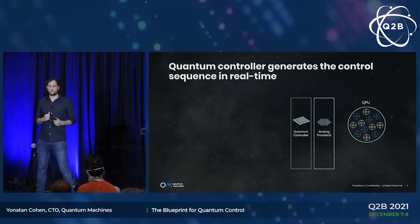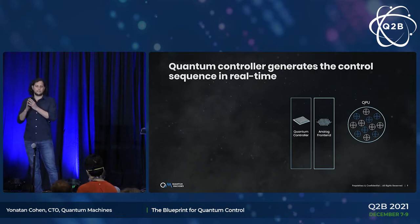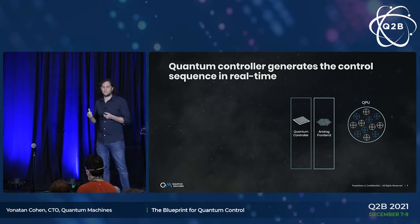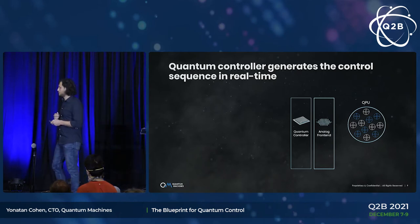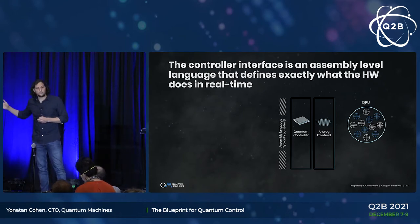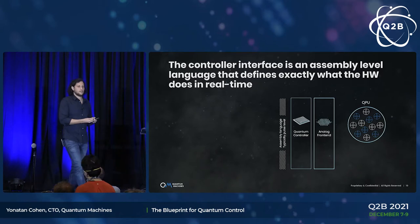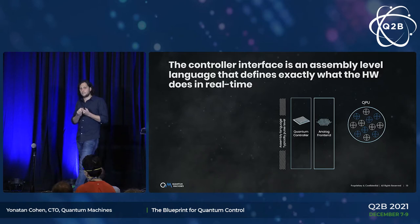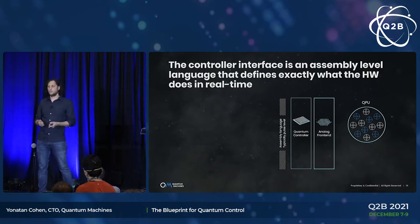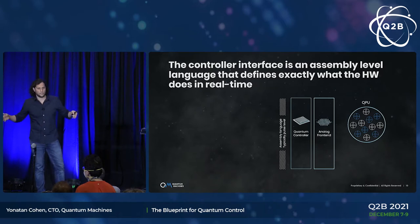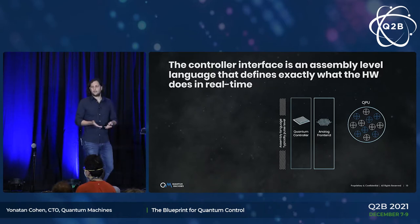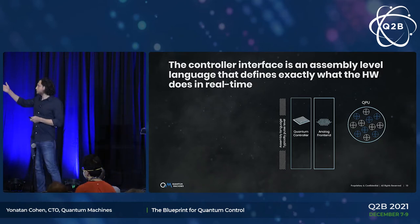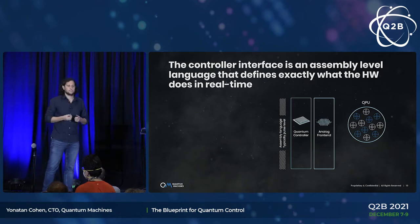The quantum controller is the brain of the control hardware — it's the component responsible for orchestrating the entire sequence that is the quantum program or quantum circuit. The interface to the quantum controller is an assembly-level language that describes exactly what the hardware does. This is a pulse-level language, because this is the lowest level access we will ever get to the quantum machine, and we need pulse-level access even if only for calibrations.